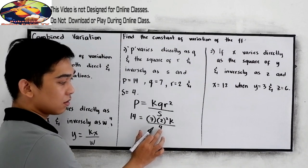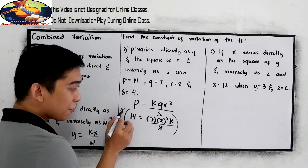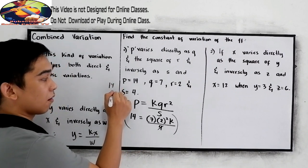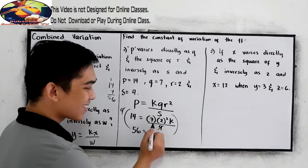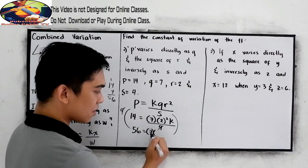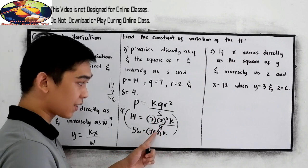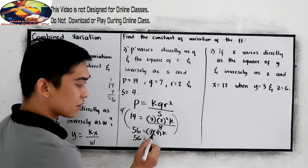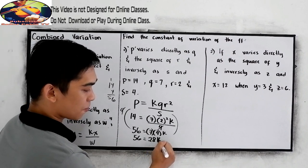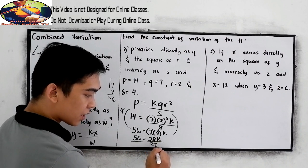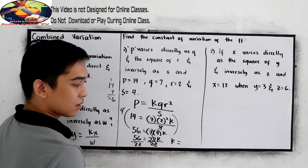To remove the fraction, we can multiply the equation by 4. So multiplying by 4, this will be cancelled out. Now we have 4 times 14, which is 56. So 56 is equal to 7 times 2 squared, that is 4, times k. 2 squared is 4, then copy 7. Now we have 56 is equal to 7 times 4, which is 28k. To find k, divide by 28. So our k is 56 divided by 28, that is 2.